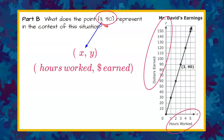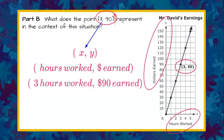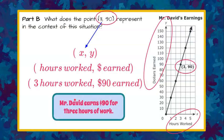Now I'm going to add in our numbers from this specific ordered pair that we're being asked to interpret. The hours worked was 3, and the 90 is $90 earned. So now we can write this as a sentence: Mr. David earns $90 for 3 hours of work.